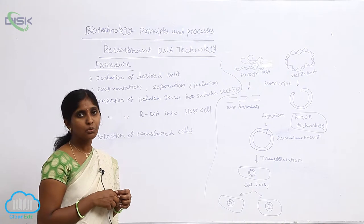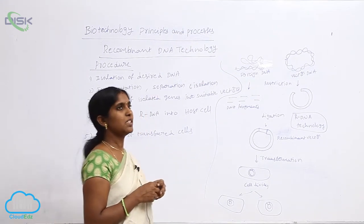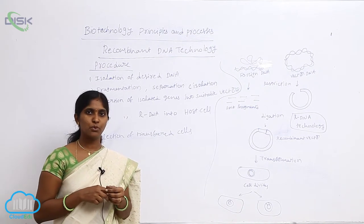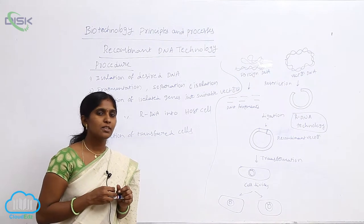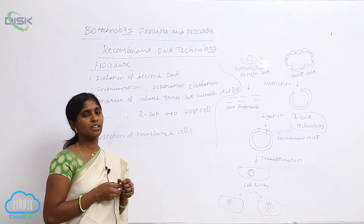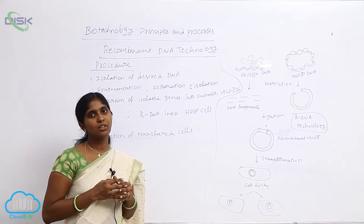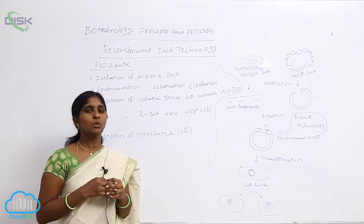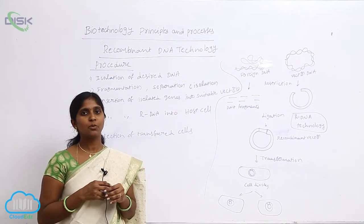How is rDNA produced? There is a protocol for it. The first step is selection of the desired genes. In the defined organism, we identify the organism with the desired character, and that organism is first selected. Then you go for the isolation of the DNA.